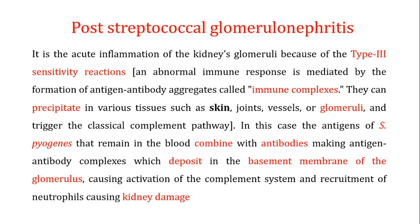Another important post-infection sequela is post-streptococcal glomerulonephritis. In this condition, acute inflammation of the kidney's glomeruli happens because of type 3 sensitivity reactions. So in acute rheumatic fever you see type 2 sensitivity reactions, whereas in post-streptococcal glomerulonephritis you see type 3 sensitivity reactions. In a type 3 sensitivity reaction, an abnormal immune response is mediated by the formation of antigen-antibody aggregates, known as immune complexes.